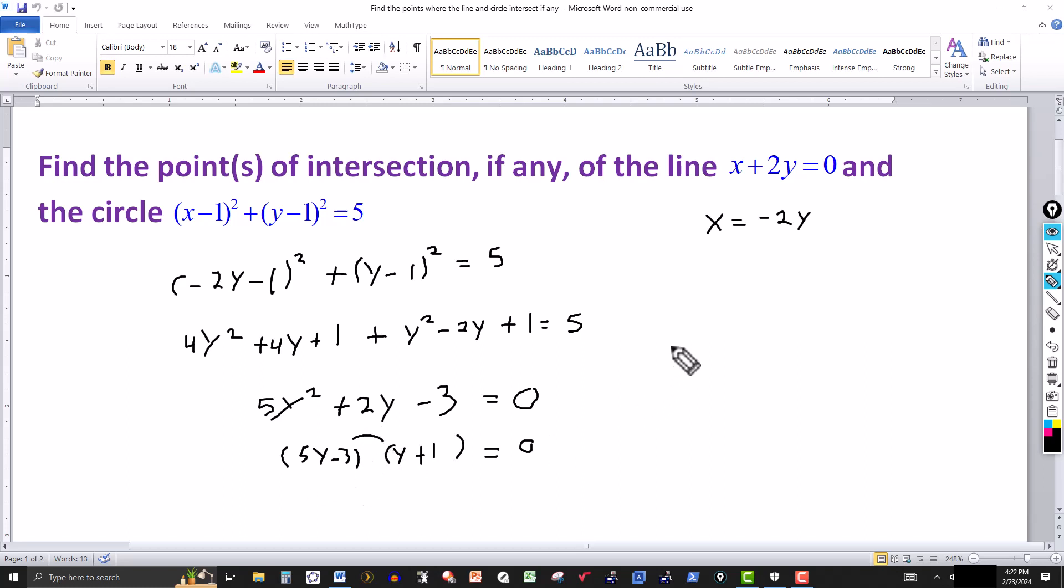And then we set each factor equal to 0. The product of two factors equal to 0 means one or the other or both are 0, so 5y - 3 = 0 or y + 1 = 0.